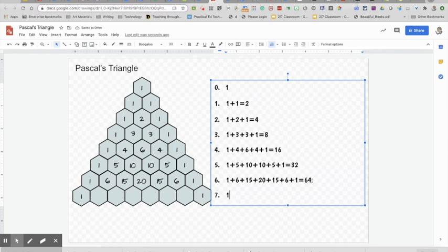In this next row, once you solve the sums of the numbers above each of these hexagons, then you can put your equation down here, and you can solve that equation and see if it follows the same pattern that you see here.